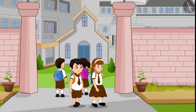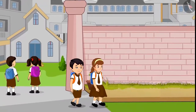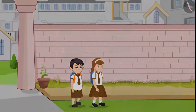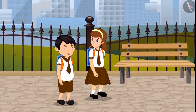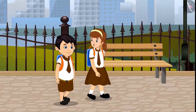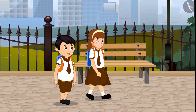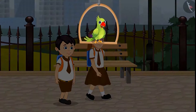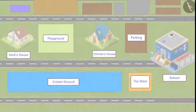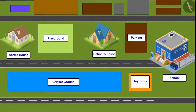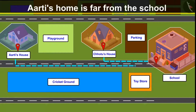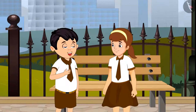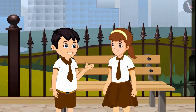Chotu and Aarti are walking home from school today. On the way back home, Aarti spoke to Chotu: 'Chotu, we leave from school to go home at the same time, but you always arrive early and I get home later. Why is it so?' Children, do you know why this happens? Come on, let us see. Aarti, my house is near the school and your house is far from the school. So that's why I reach home early and it takes you more time to reach home.